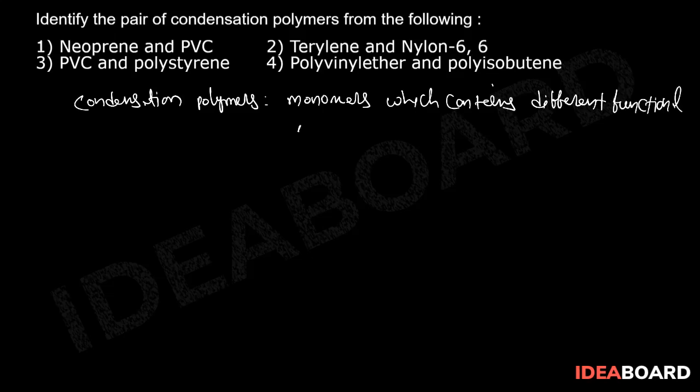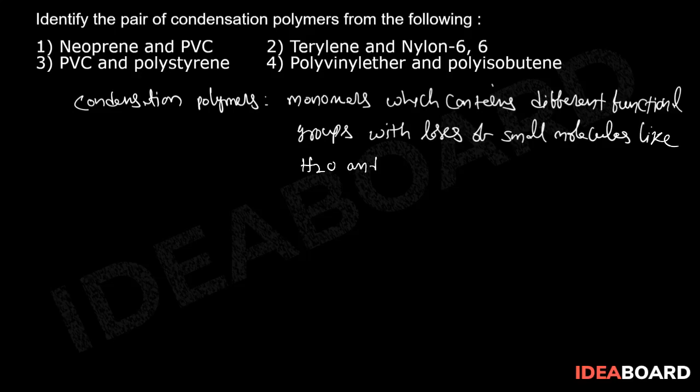These are involved in polymerization with the loss of small molecules like water and ammonia. For option verification, the second option is terylene. Terylene contains two monomers.